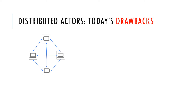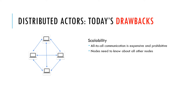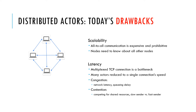This leads to a number of drawbacks in terms of both scalability and performance. First, all-to-all communication can be prohibitive at large scale, as all nodes need to communicate heartbeat and membership information to all other nodes in the cluster. Second, a single TCP connection introduces a communications bottleneck as many actors are multiplexed onto a single connection. This leads to two effects: congestion, where high latency connections or large payloads can introduce queuing delay, and contention, where processes sending at different rates compete for the shared resource — the network.